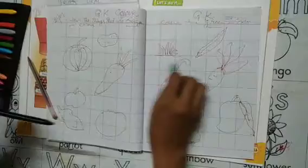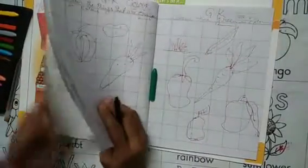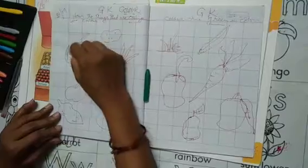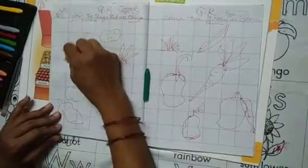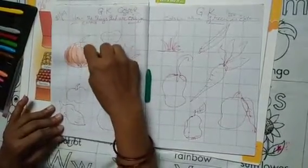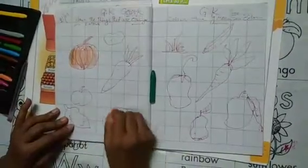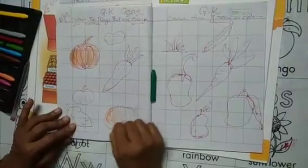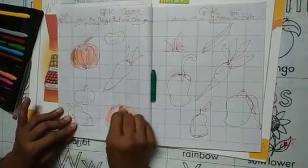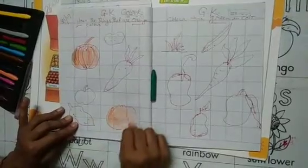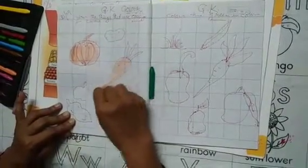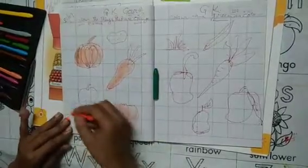Orange color pumpkin. Pumpkin is orange. You can color orange color. Pumpkin is orange. Orange is orange. Carrot is orange. Papaya is orange.